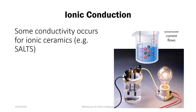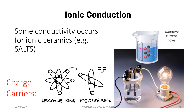Now let's look at ionic conduction. Ionic conduction is a less important form of conduction in materials since the contribution is usually much lower than electronic conduction. In ionic conduction, the conduction happens through the movement of charged ions, with your charge carriers being either anions or cations.